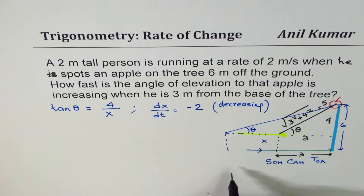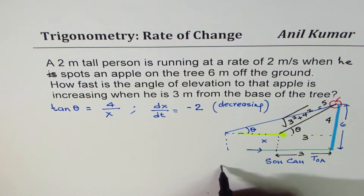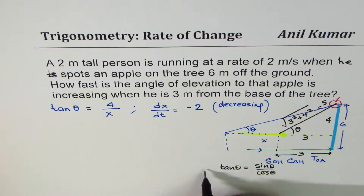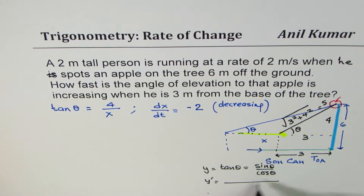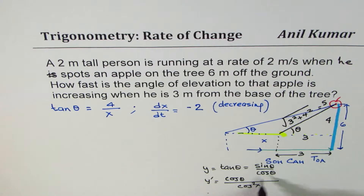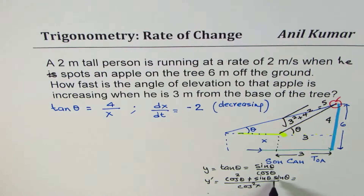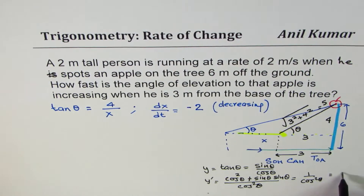If you don't know the derivative of tan θ, we can derive it. Let y = tan θ = sin θ / cos θ. Applying the quotient rule: y' = (cos²θ + sin²θ) / cos²θ = 1 / cos²θ, which is secant squared θ. So that's the derivative of tan θ.